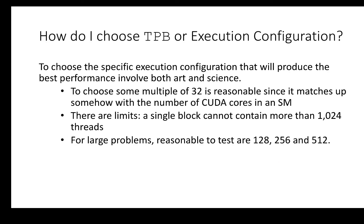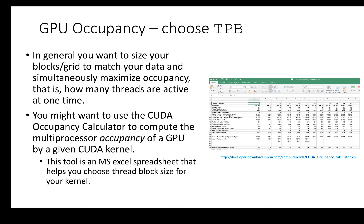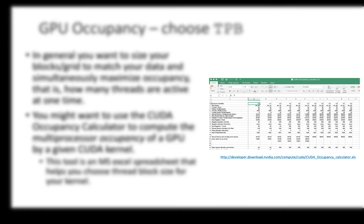A legitimate question is how to choose tpb. The specific execution configuration that will produce the best performance involves both art and science. Choosing some multiple of 32 is a reasonable choice, since it matches up with the number of CUDA cores in a warp. There are limits though: a single block cannot contain more than 1024 threads. For large problems, it is reasonable to test with 128, 256, and 512 threads per block. If you want a less experimental approach, you might use the CUDA Occupancy Calculator to compute the multiprocessor occupancy of a GPU by a given CUDA kernel — it is available as an Excel file, with the link posted on the slide.